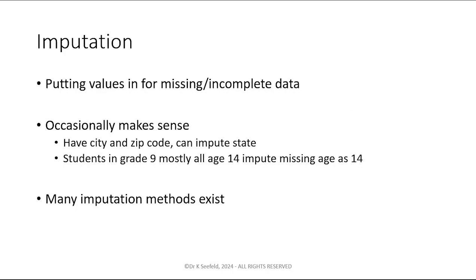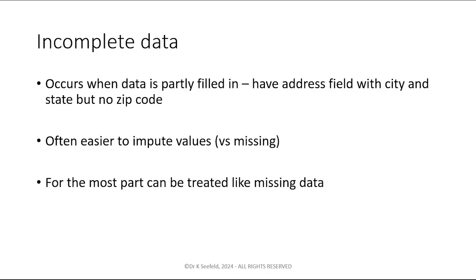Imputation is the process of putting in values for missing data, which occasionally makes a lot of sense. If you have a city and a zip code, then you know what state it is; you can put that in. If a student is in grade nine, you most likely can assume that they're 14 or 15 years old. You might want to denote somehow that that was imputed. Typically you would, but many imputation methods exist. Imputation basically means you're filling in the missing values in a way that's educated and not just random.